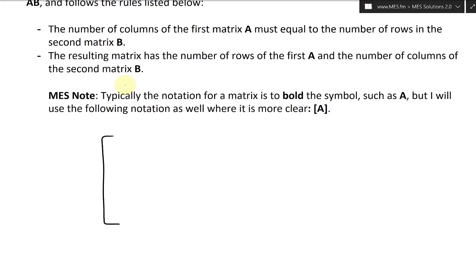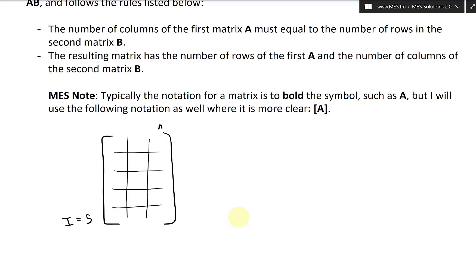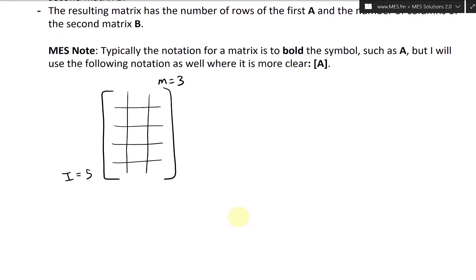Let's say we have a matrix with five rows — so I equals five — and three columns, so M equals three. This is our matrix A. We are going to multiply this matrix A by B.